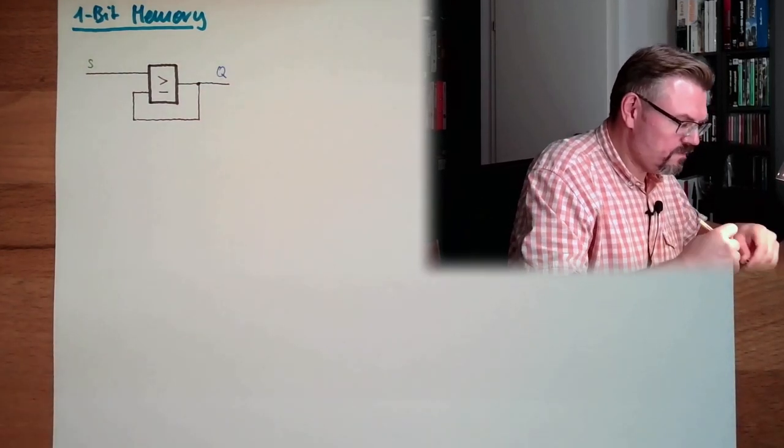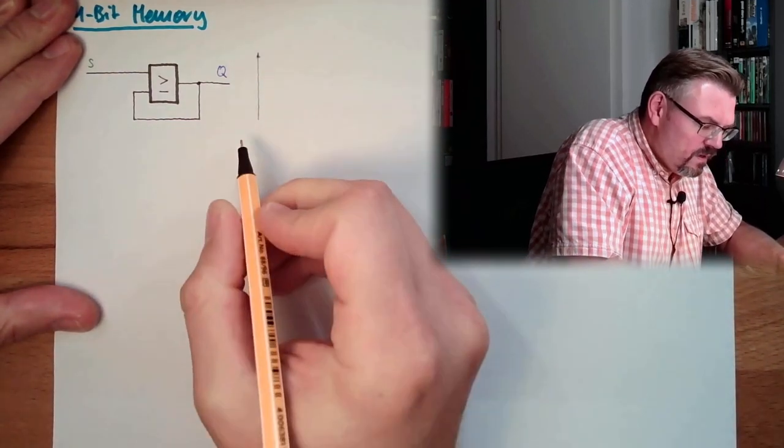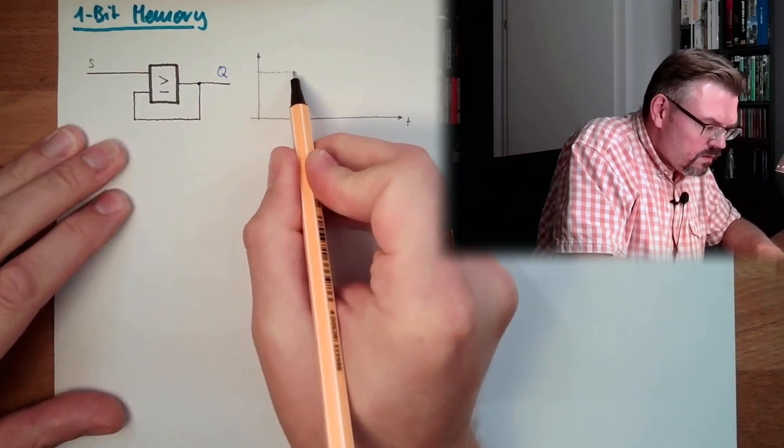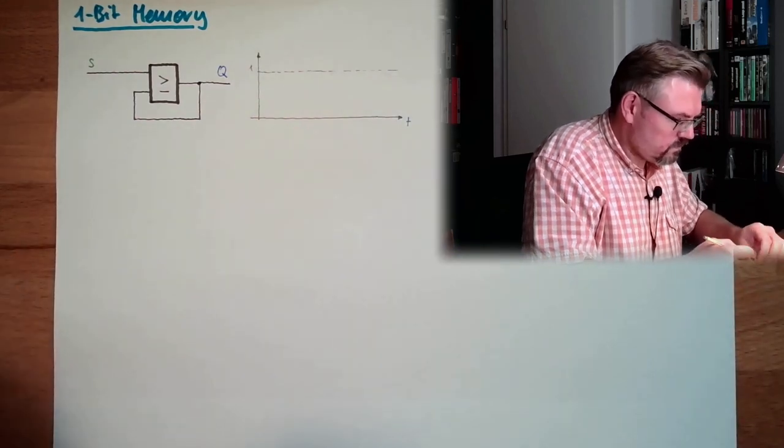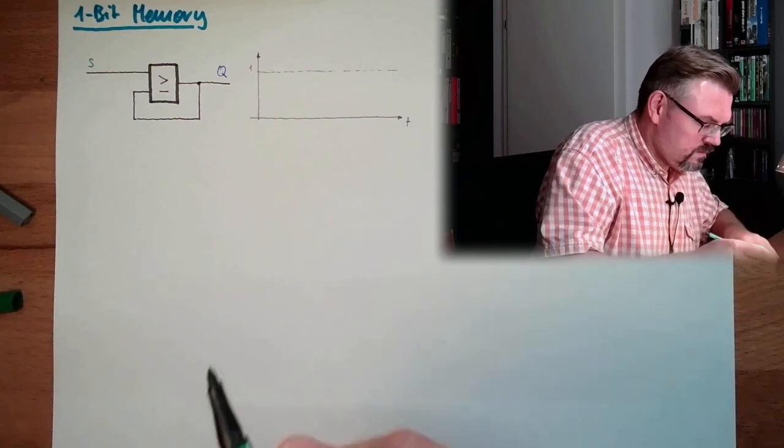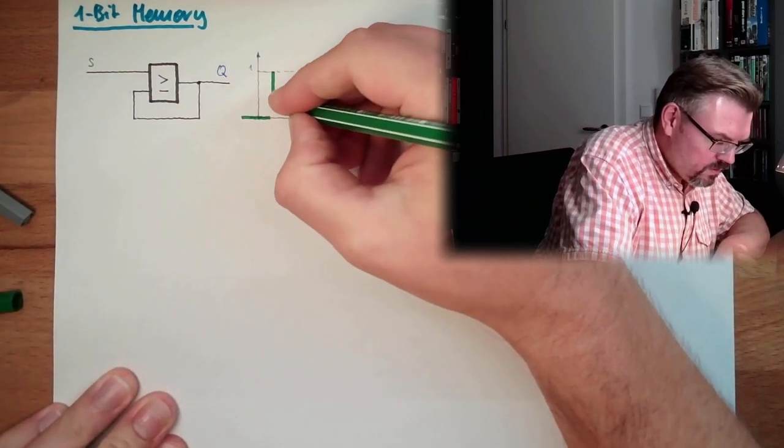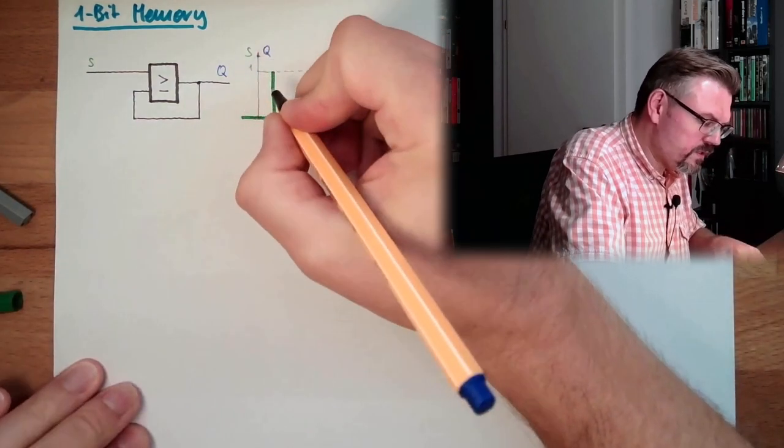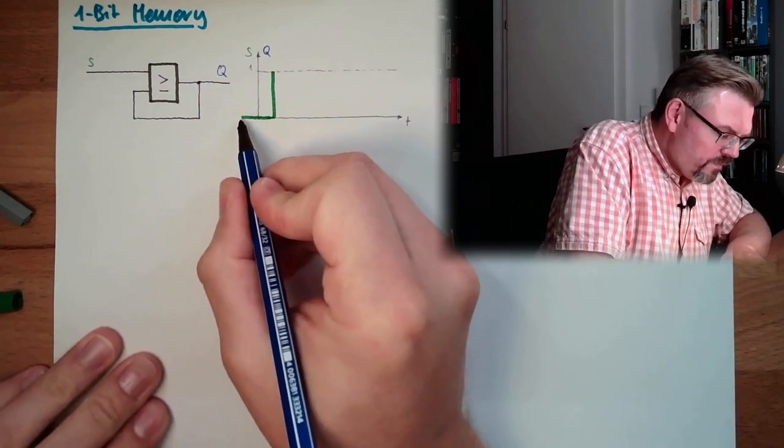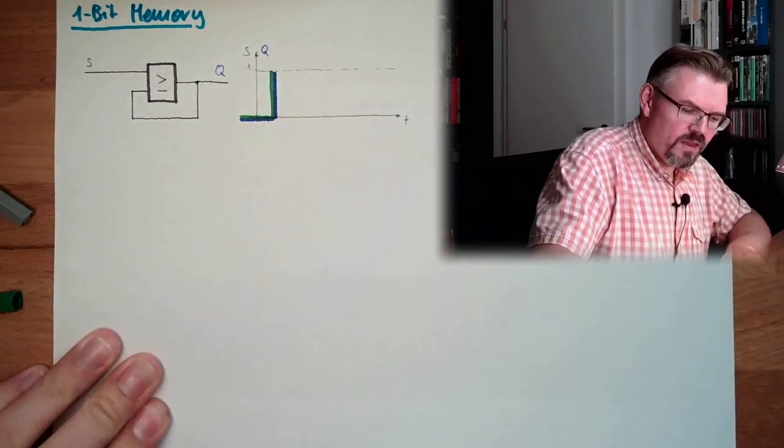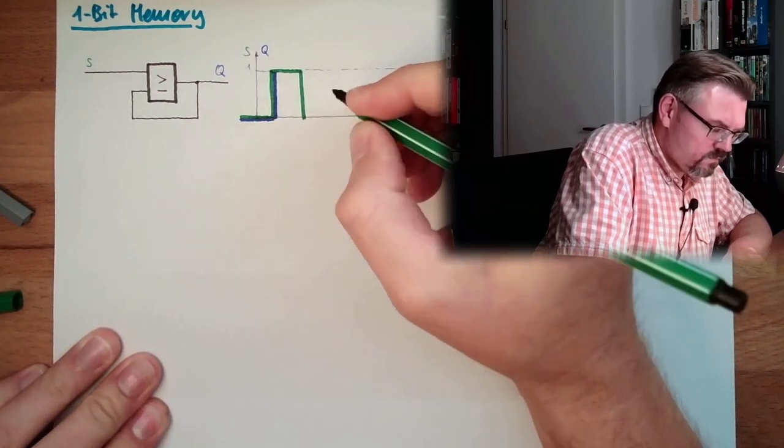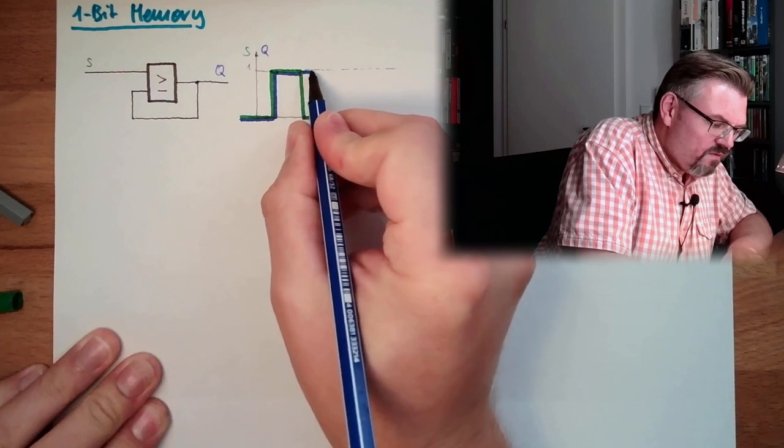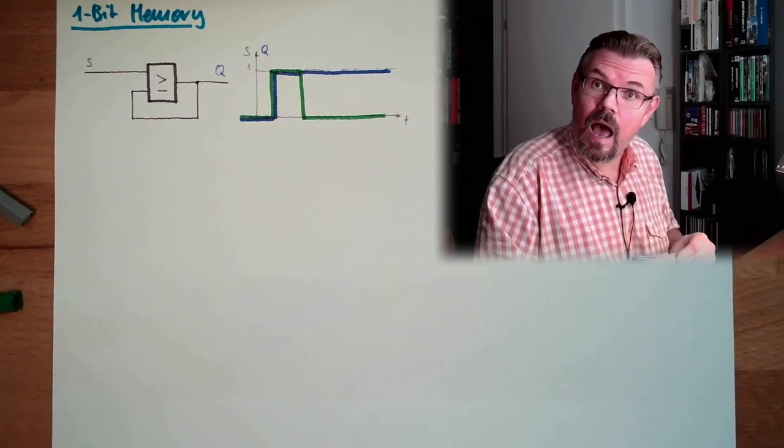Let's have a look at the timing diagram. T is logically 1. If S is 0, and at a certain point in time we will go to 1, what will Q make? Q will do exactly the same. So Q is 0, and then we will reach 1. And after a while, after S is gone, Q will remain on because it will feed itself. We have really stored something!